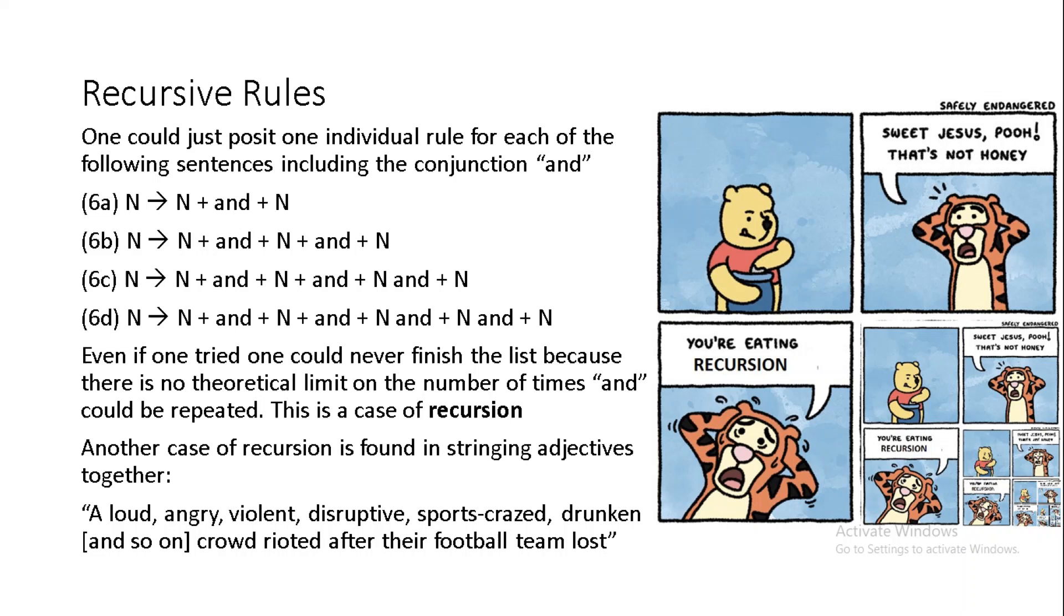On one hand, for example, one could simply posit a different new rule for each one of say the following structures involving the conjunction AND. We have of course sentences with only one AND between two nouns and that could be one rule but what about a sentence where you have two ANDs and three nouns? Well I guess we could give another rule for that and then another rule still for a sentence with three ANDs and four nouns and so on. The problem here is that even if you try to linearly list out all the variations on this particular rule you would never actually be able to finish because there is no theoretical limit on the number of ANDs that could be strung together. For this reason it is a recursive rule which can be reapplied an indefinite number of times rather than a set of many individual rules as such.